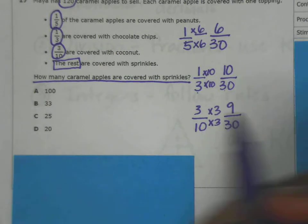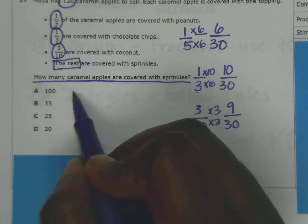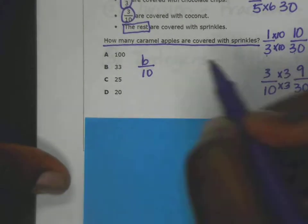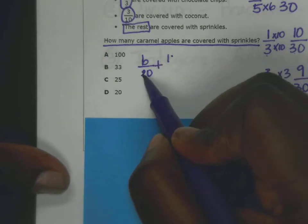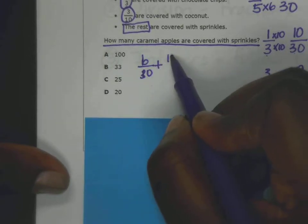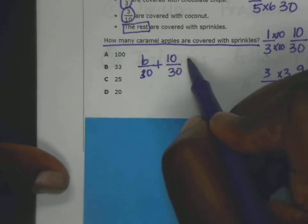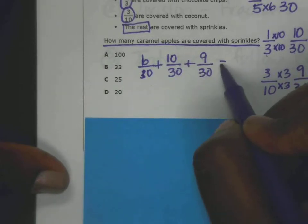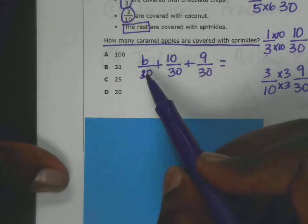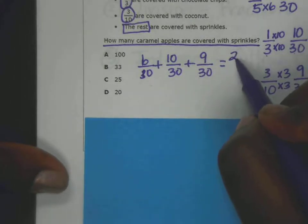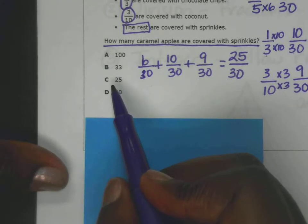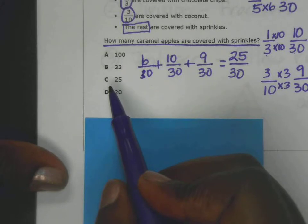Pretty lengthy problem, but let's keep going. So I have 6/30 plus 10/30 plus 9/30, which equals 25/30. Notice that's an answer choice, but that is not our answer.